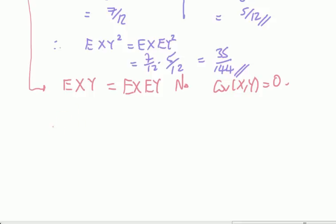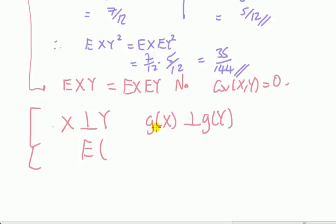Let's just state this result, an important result. If x and y are mutually independent, then any function of x will be independent of any function of y. And that means the expected value of a function of x times a function of y will be equal to the product of the individual expectations.